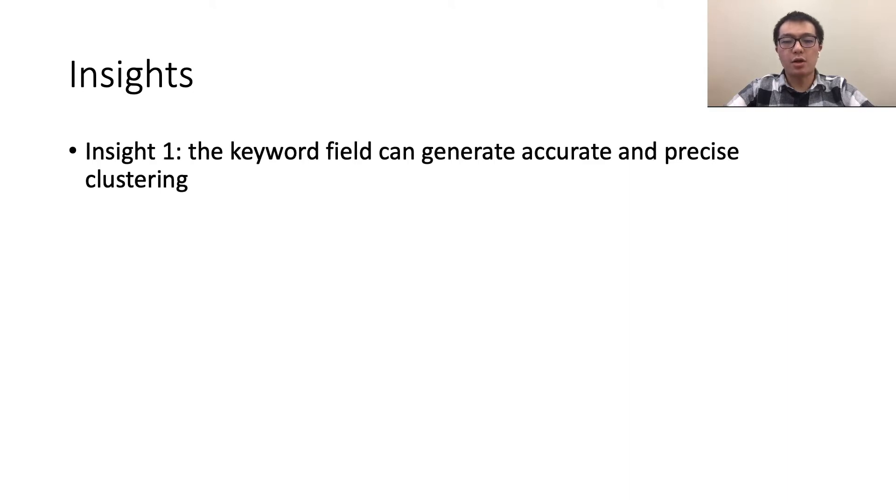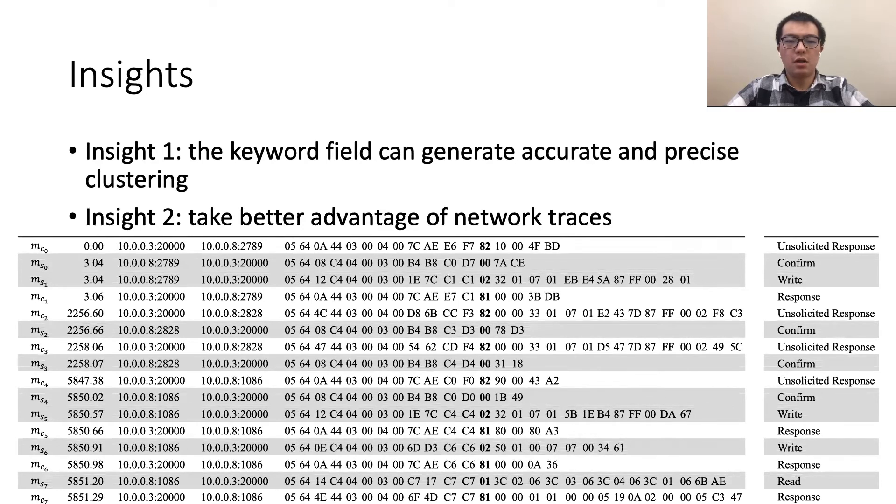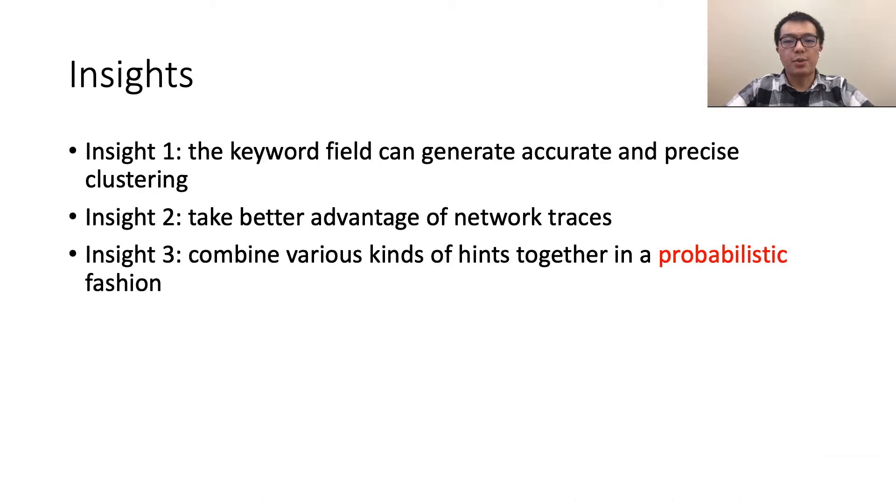First, when a client or server receives a message, it determines the type only by the keyword. Thus, if we can infer the field denoting the keyword, we will obtain the ideal clustering results. Second, we can take better advantage of network traces, which are the only input for trace-based methods. Existing works only analyze message data from one side. However, we could observe more hints if we consider traces from both sides. For example, we can see that all the unsolicited response messages from the client always trigger the confirmed messages from the server as a response, which means clusters on the two sides have some correspondence. These additional hints could be used to improve and validate clustering results. Another insight is to assign a prior probability to each hint denoting its uncertainty instead of making a simple deterministic call and aggregate these hints with probabilistic inference.